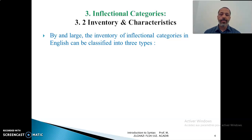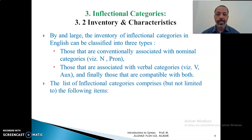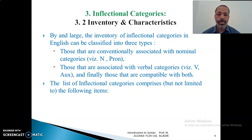Concerning the inventory of the inflectional categories, the list includes basically many elements such as tense, number, gender, and mood. By and large, the inventory of the inflectional categories in English can be classified into three types: those that are conventionally associated with nominal categories, those that are associated with verbal categories such as the verb and its auxiliaries, and finally those that are compatible with both nominal and verbal categories.